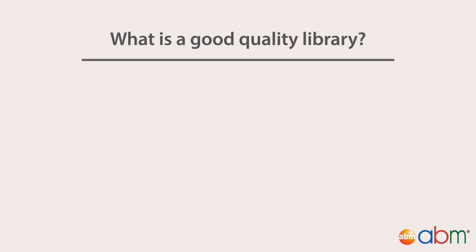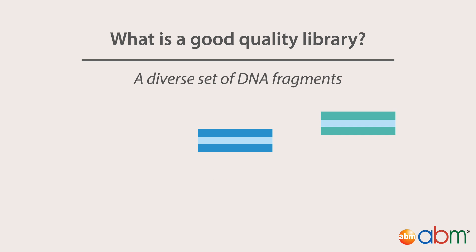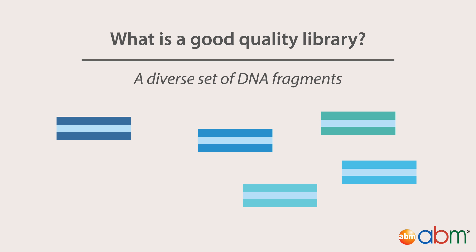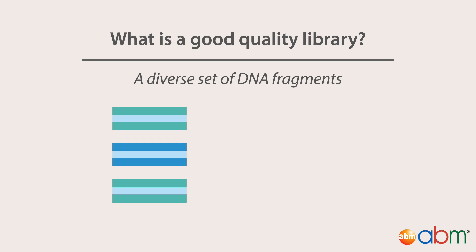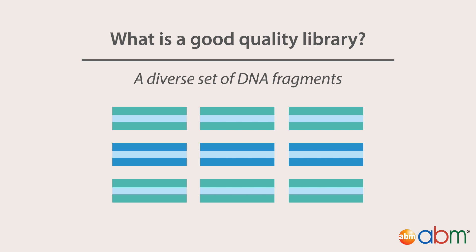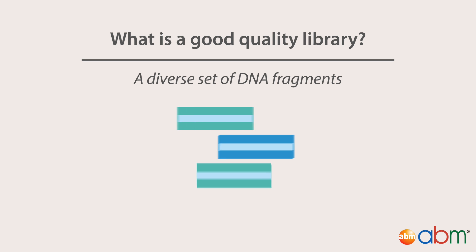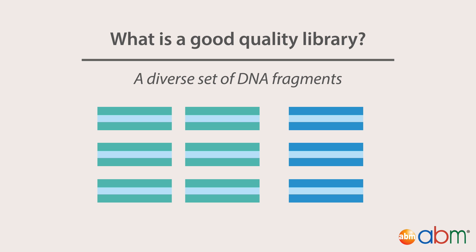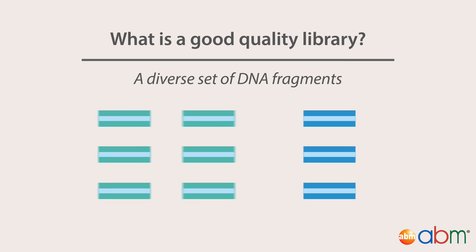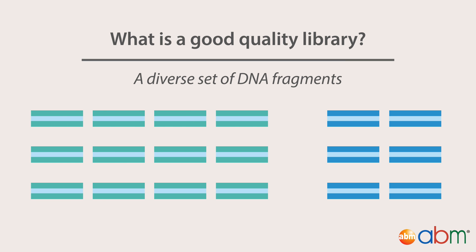In terms of quality, a good quality library is one that has a diverse set of DNA fragments with minimal duplicate fragments. This is important because during PCR amplification, duplicates of fragments will be generated. The consequence of duplicate fragments is that the sequencing reaction will be biased towards these fragments, rather than having a wide range of fragments sequenced. The same fragments are sequenced repetitively, resulting in overrepresentation in the machine output.